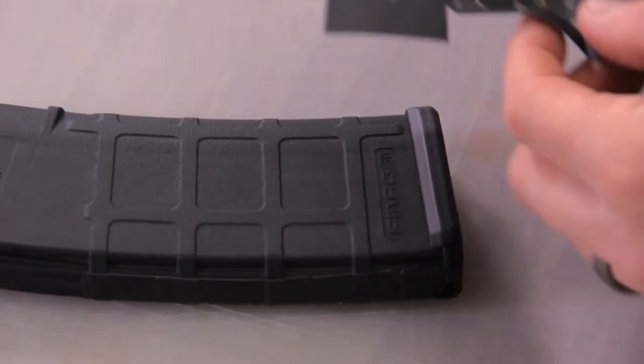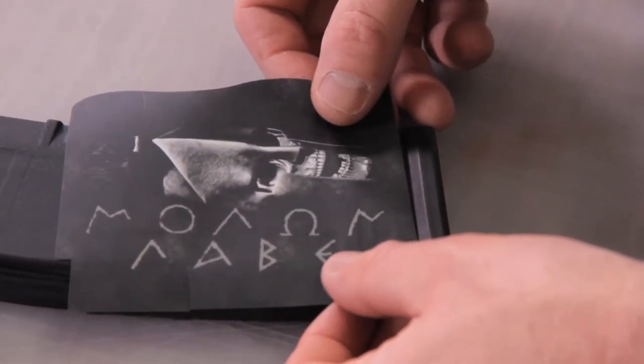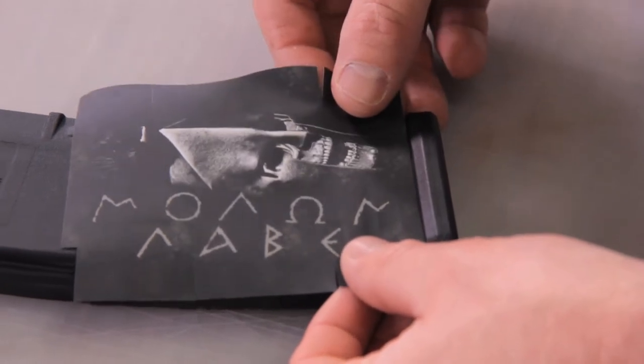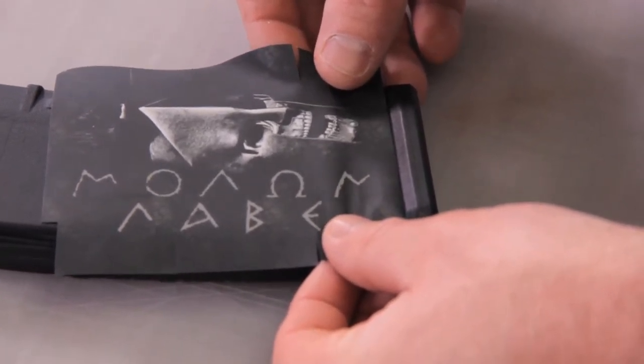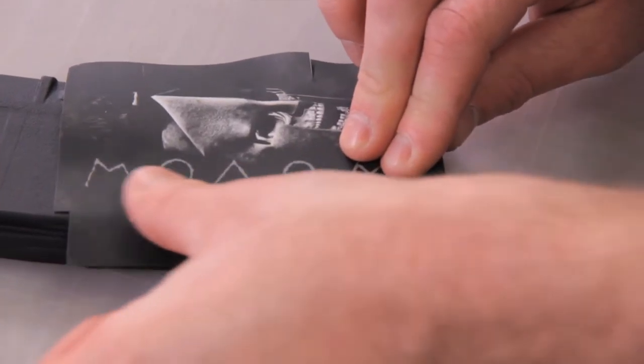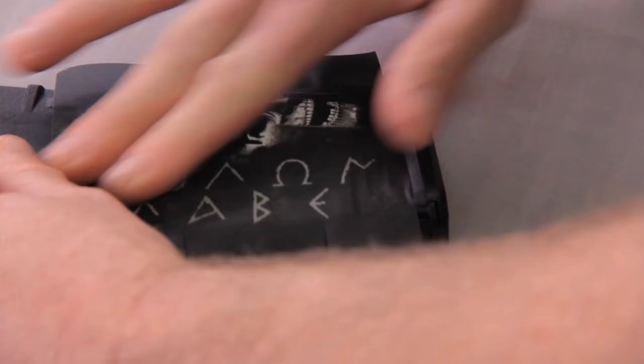Okay, so moving on to the right side. Same thing. You want to line it up at the bottom on that back edge and press it into place with your fingers.